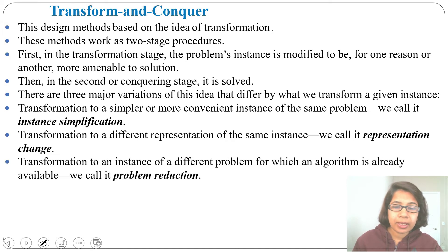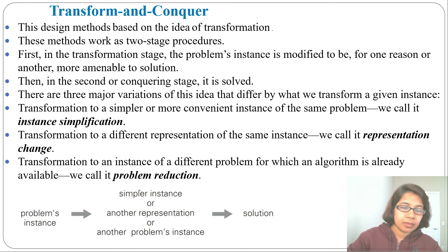Next, transform to an instance of different problem for which an algorithm is easily available. We call it Problem Reduction. So there are three types of Transformation: Instance Simplification, Representation Change, and Problem Reduction. One problem instance is given, either we can convert to simpler instance or another representation or another problem instance, then we can get the solution.